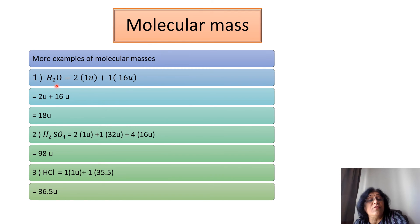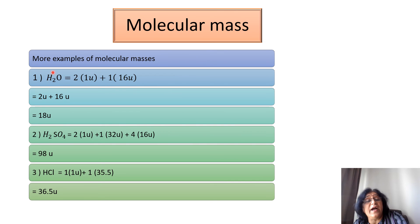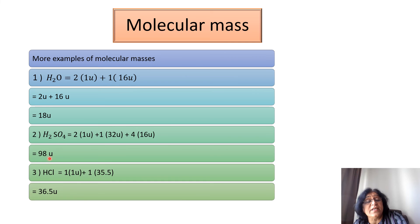The molecular mass of water (H₂O) is 2 × 1 U + 1 × 16 U = 18 U. For sulfuric acid (H₂SO₄), the average atomic masses of hydrogen, sulfur, and oxygen all add up to give a molecular mass of 98 U. For HCl, the average atomic mass of hydrogen plus the average atomic mass of chlorine comes out to be 36.5 U.